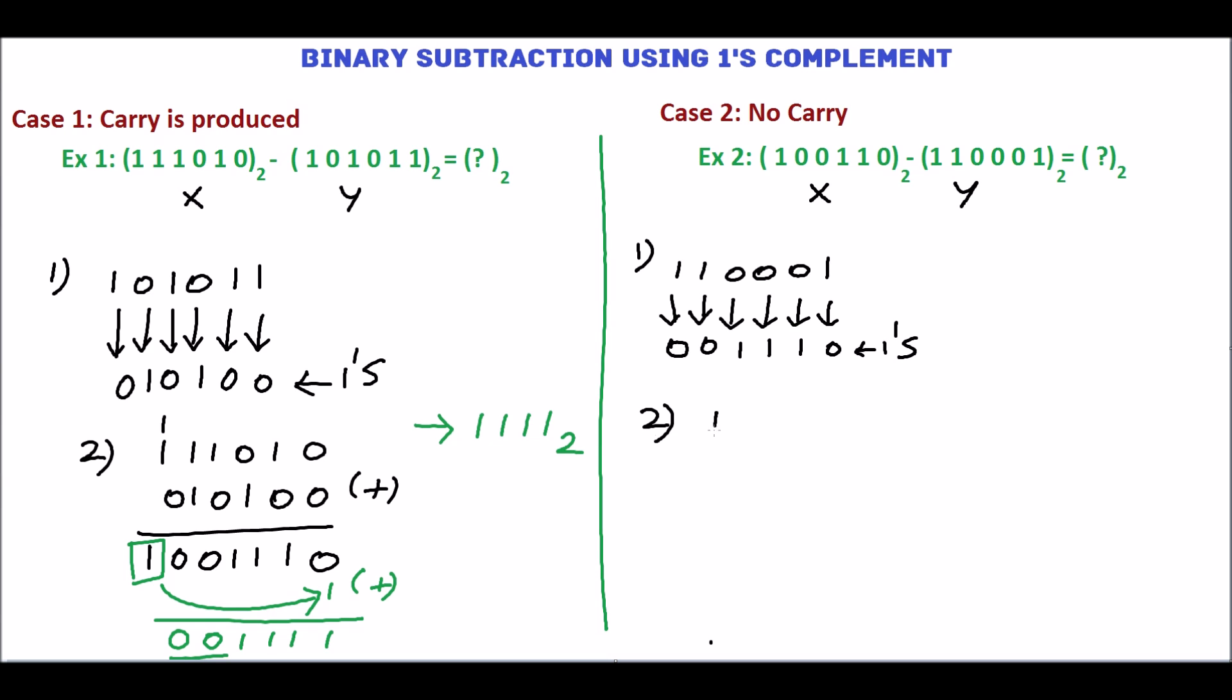In step 2, add x, 100110, and 1's complement of y which is 001110. Add this: 0, 1 plus 1 sum is 0 carry 1, 1 plus 1 plus 1 sum is 1 carry 1, 1 plus 1 sum is 0 carry 1, 1, 1.